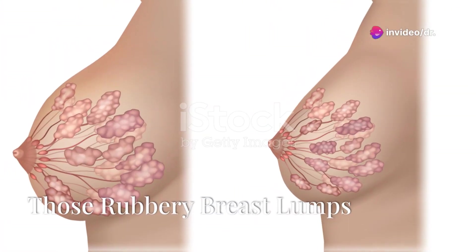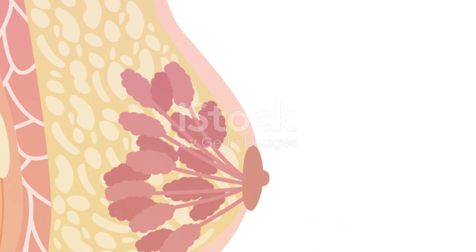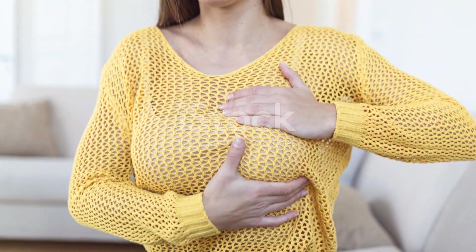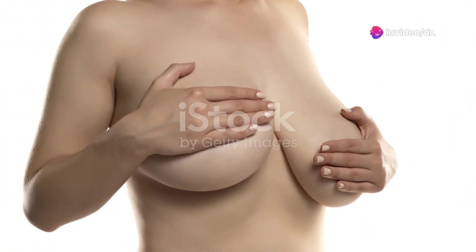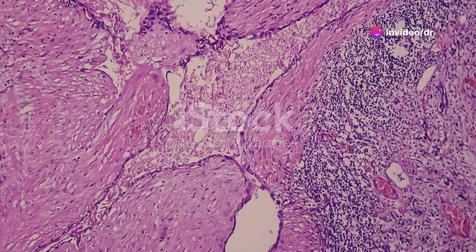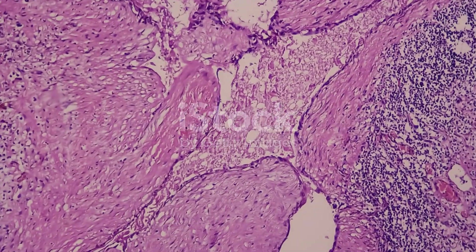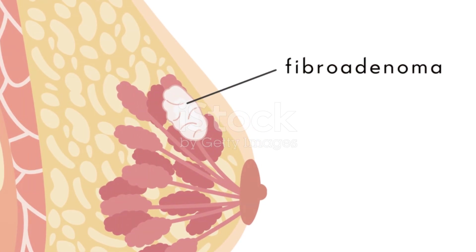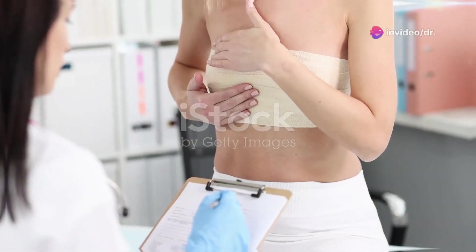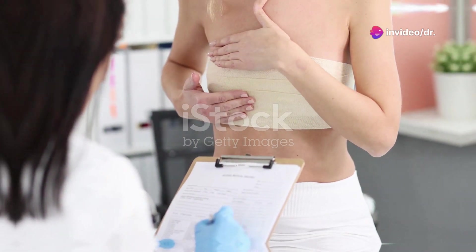So you found a lump in your breast and it feels kind of round, rubbery, and moves around a bit — you might be dealing with a fibroadenoma. These are benign tumors and they're especially common in women under 30. Think of them like little well-defined marbles in your breast tissue. They're usually painless, but it's always a good idea to get any new lump checked out by your doctor just to be safe.